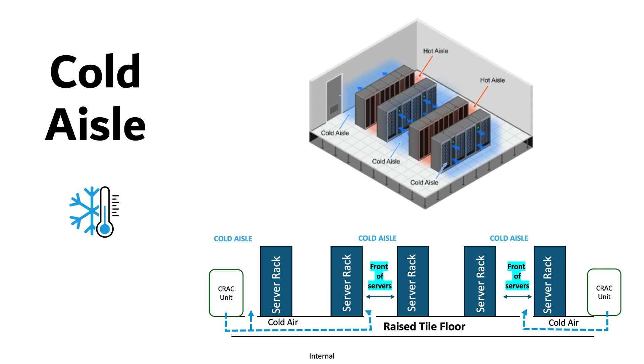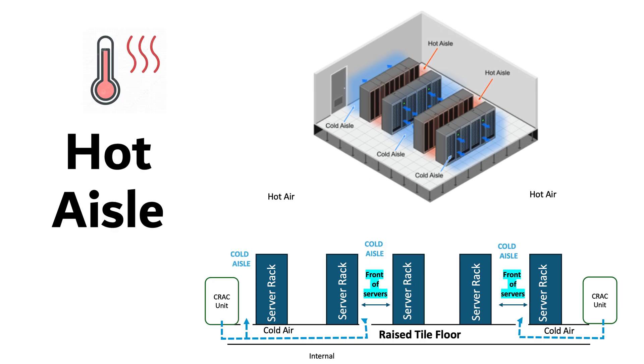The hot aisle is the aisle where the back of the servers, which expel hot air, face each other. Hot air is exhausted into the aisle from the servers and then directed into the air conditioning system for cooling. The goal is to isolate the hot air to prevent it from mixing with the cool air so it can be efficiently removed from the data center.